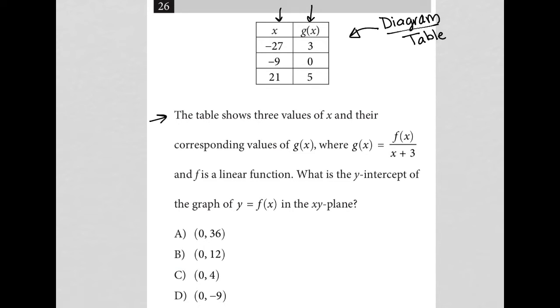The question says the table shows three values of x and their corresponding values of g of x, where g of x equals f of x over x plus three, and f is a linear function. That means f of x is equal to mx plus b - that's what that statement means.